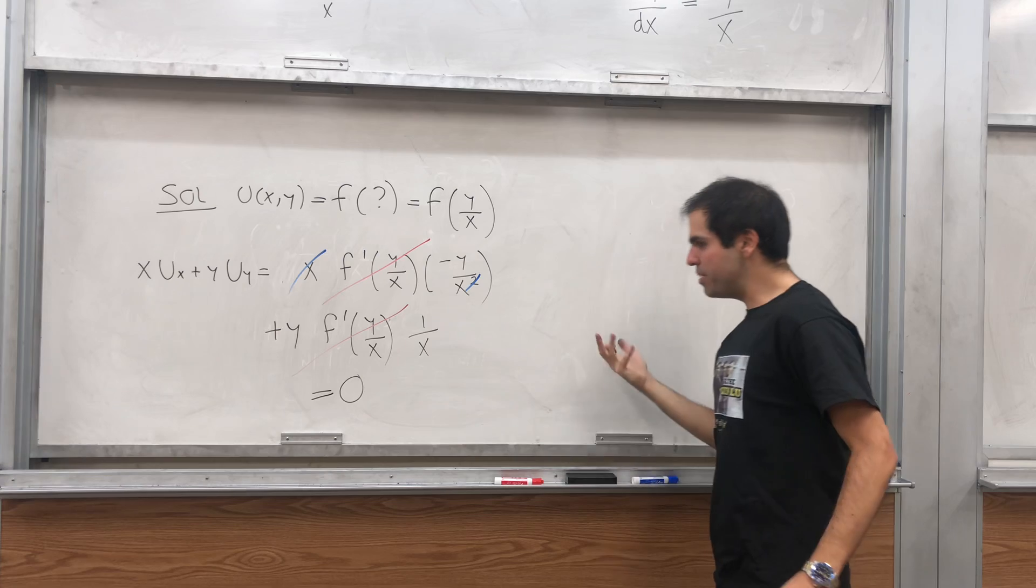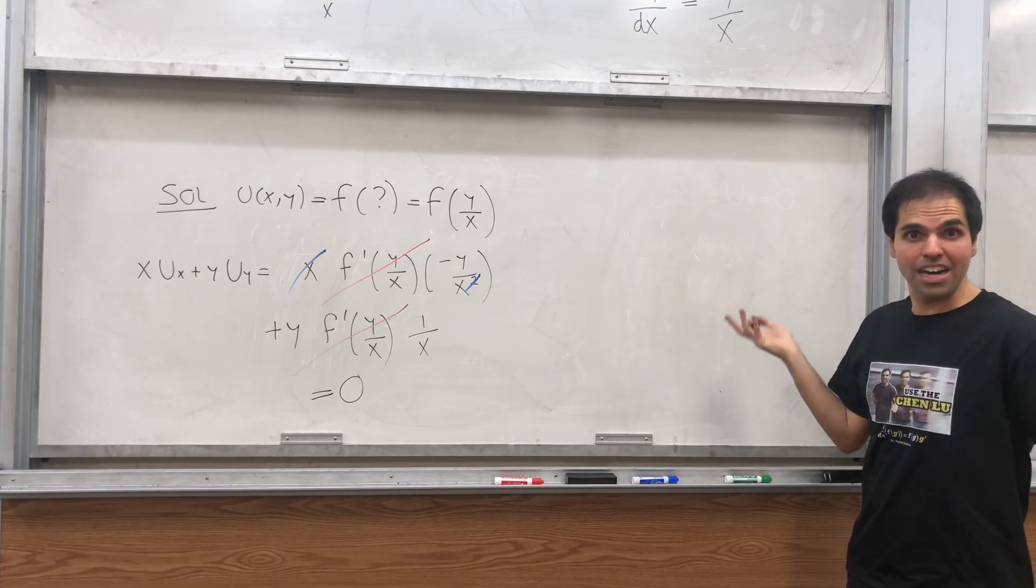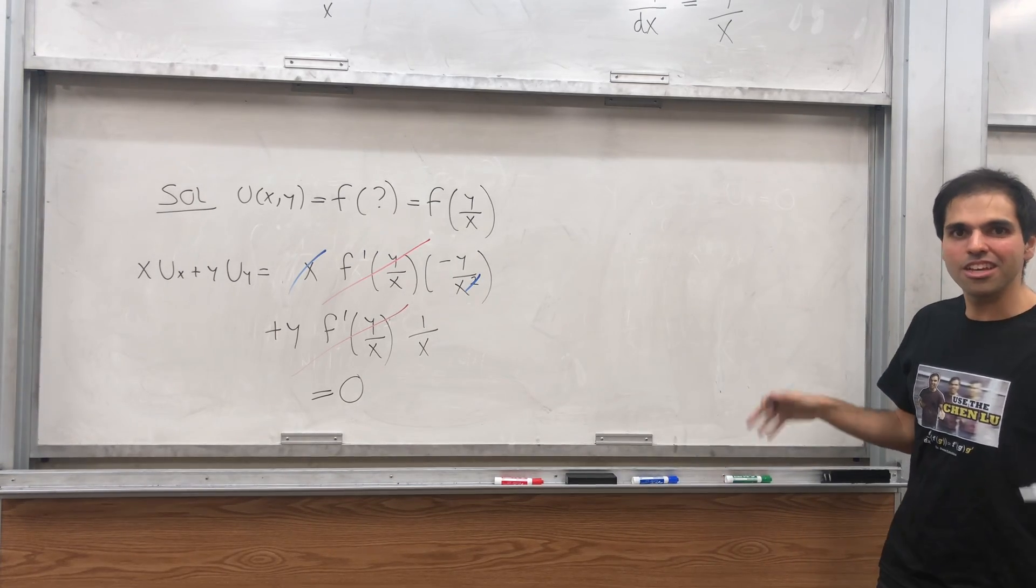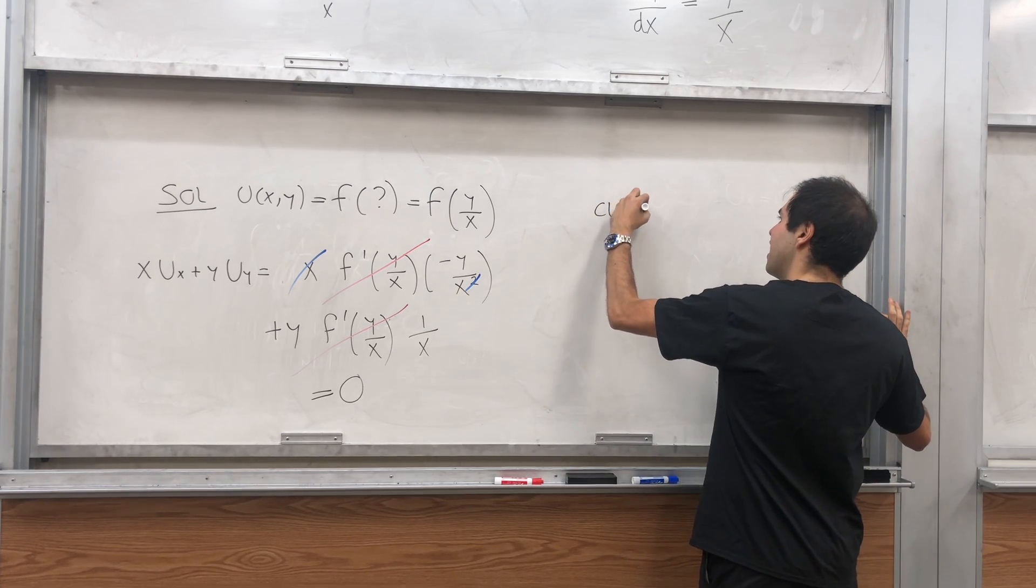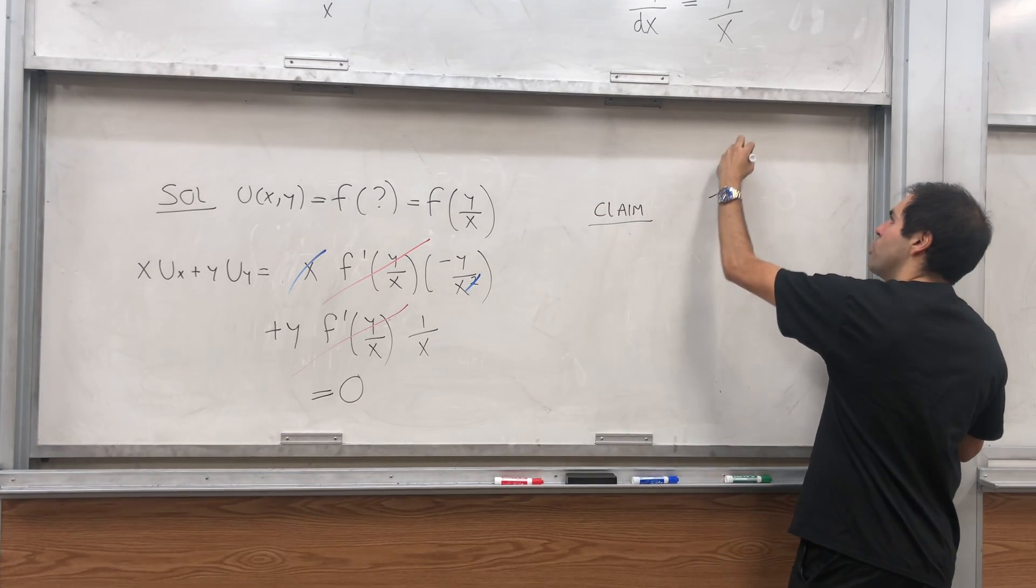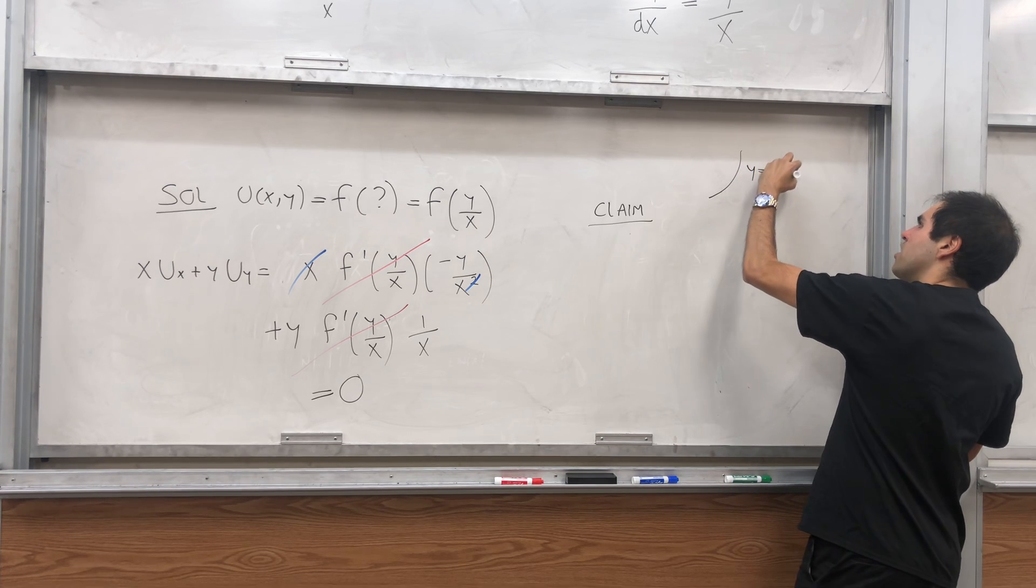And lastly, let me maybe show you why this magic trick works with this being constant on the curves. So basically, I'm claiming that if you have this curve, y equals y of x.